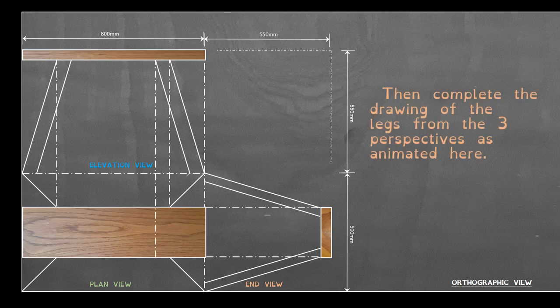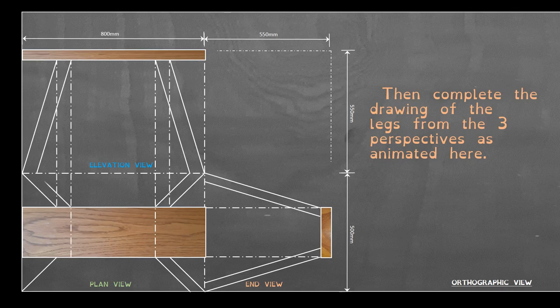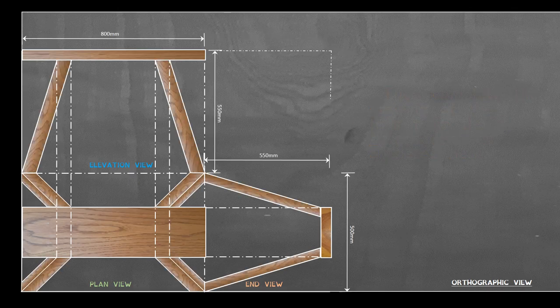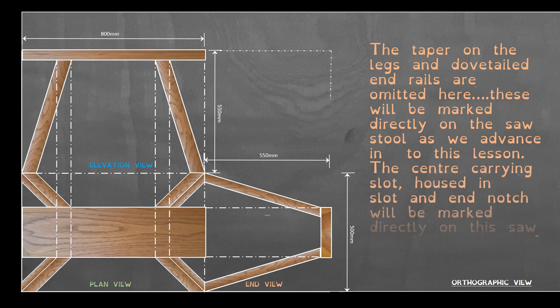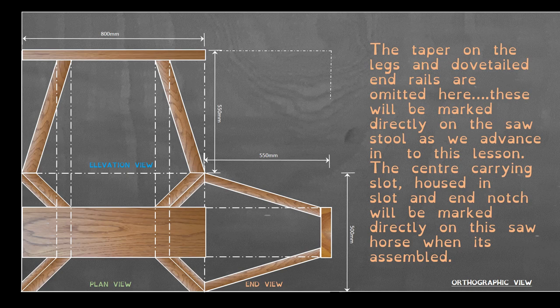Then complete the drawing of the legs from the 3 perspectives as animated. This is the almost completed orthographic view. The taper on the legs and dovetailed end rails are omitted here. These will be marked directly on the sawstool as we advance. The centre carrying slot, housing slot and end notch will also be marked directly after it has been assembled.